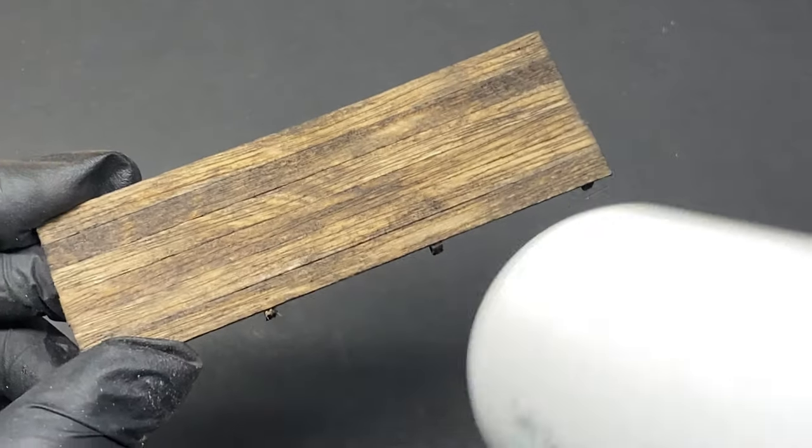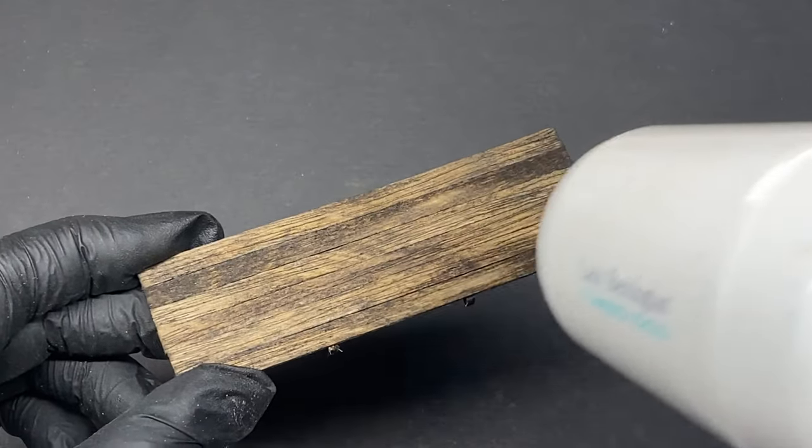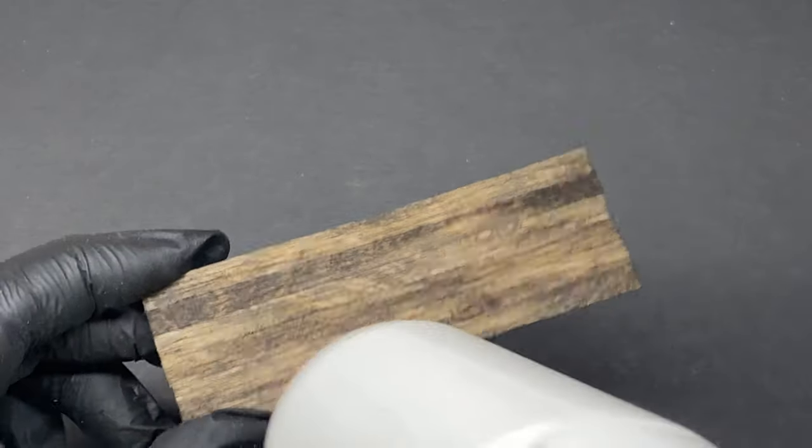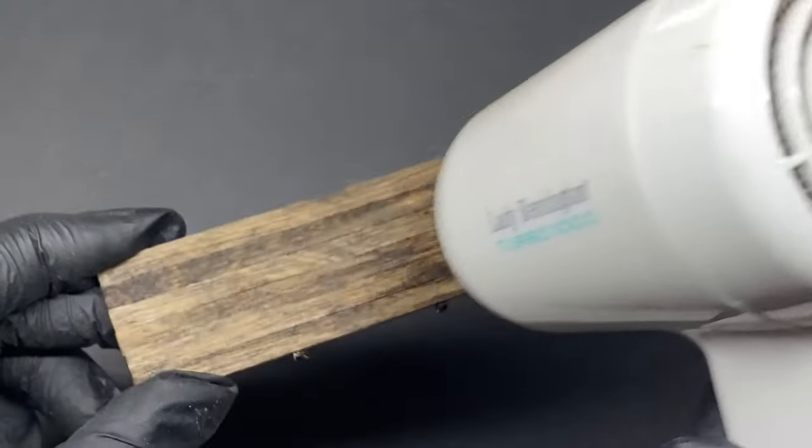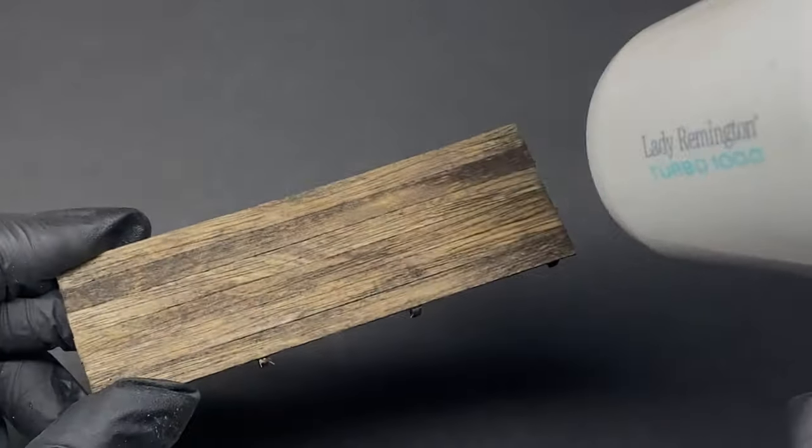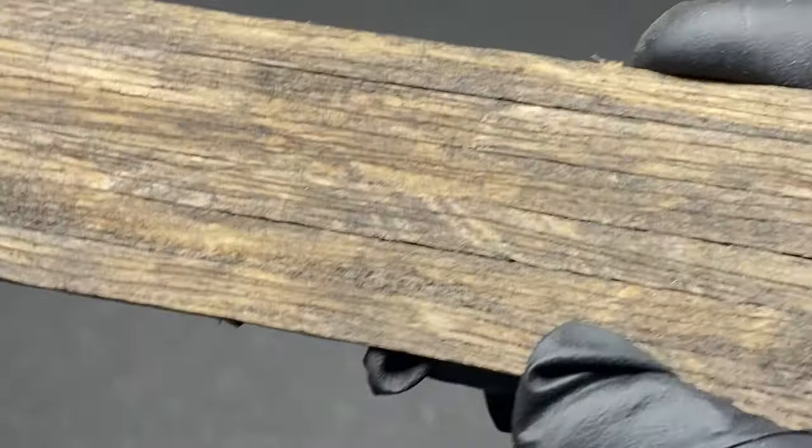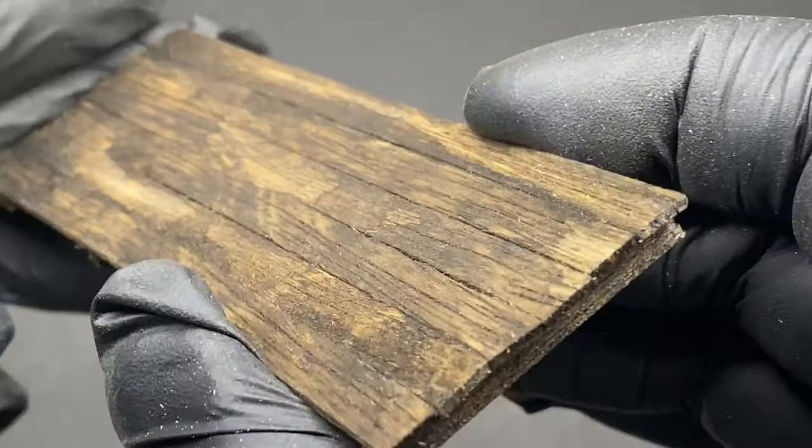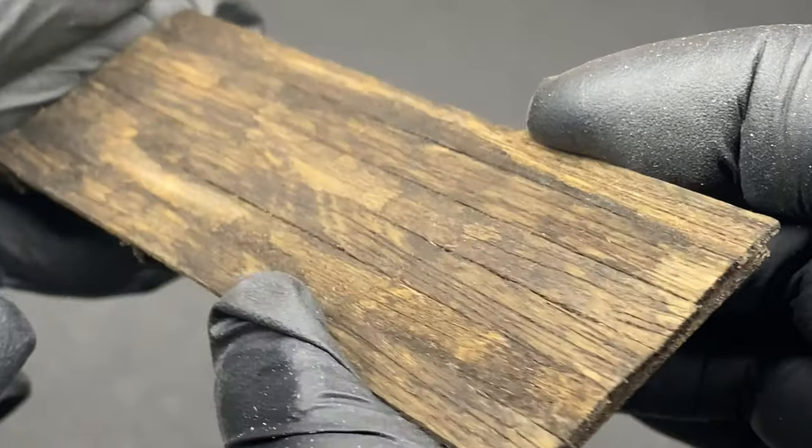The alcohol dries or evaporates off quite quickly, but I still use a hairdryer to speed up this drying process even further. In fact, the hairdryer is perhaps my most frequently used tool at the workbench. Once the stain is dry, we have the desired mottled, uneven finish.